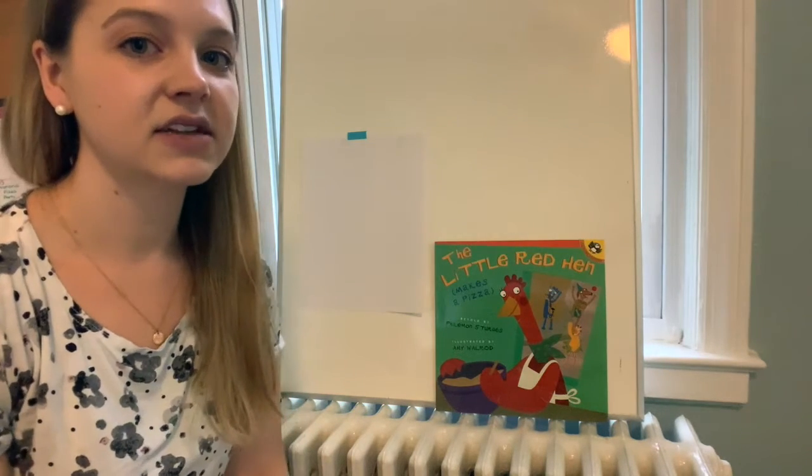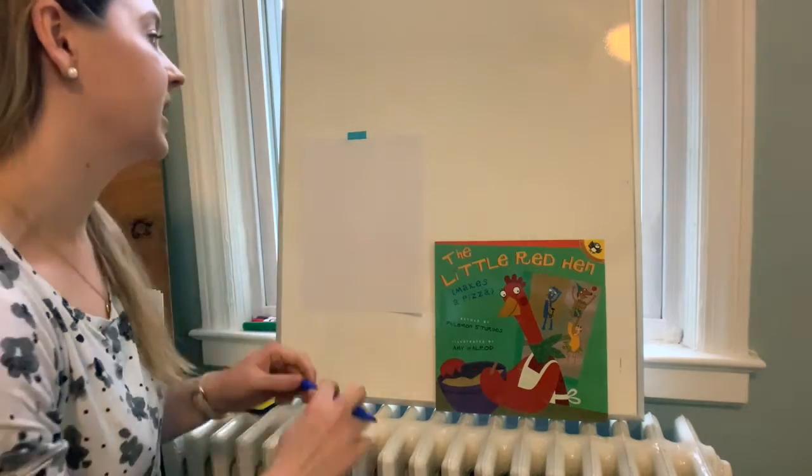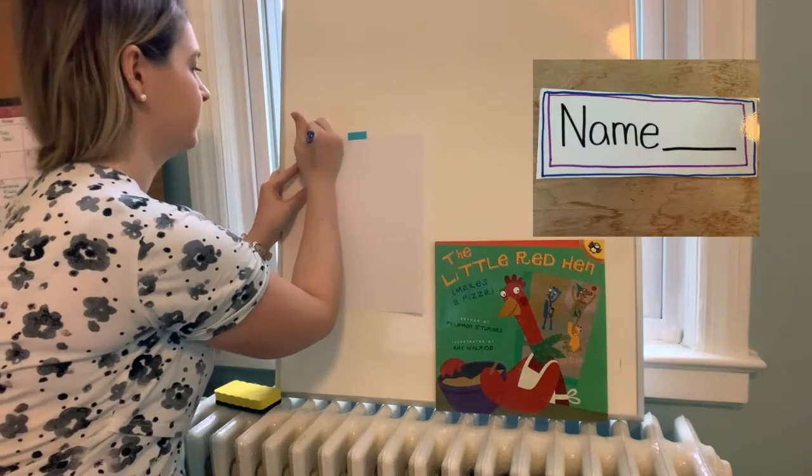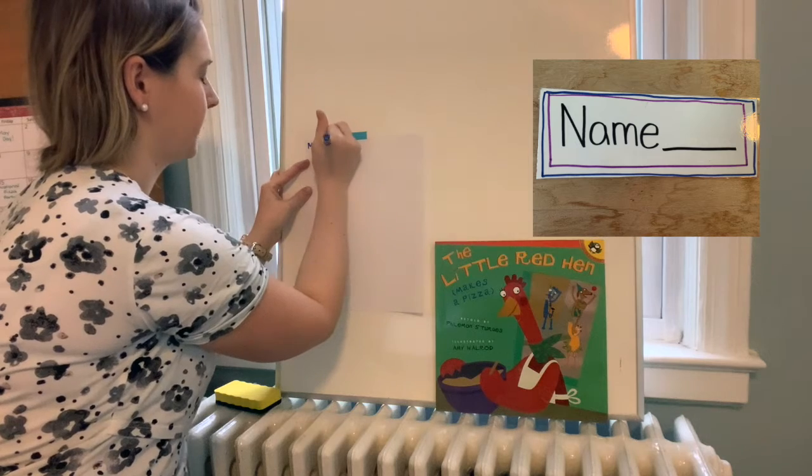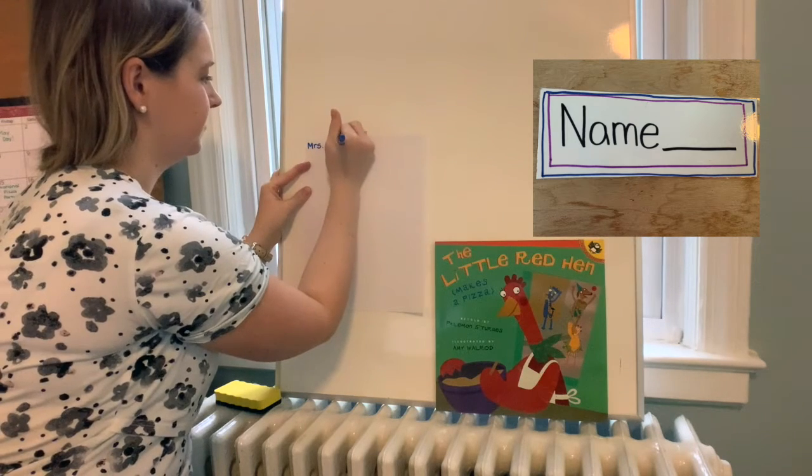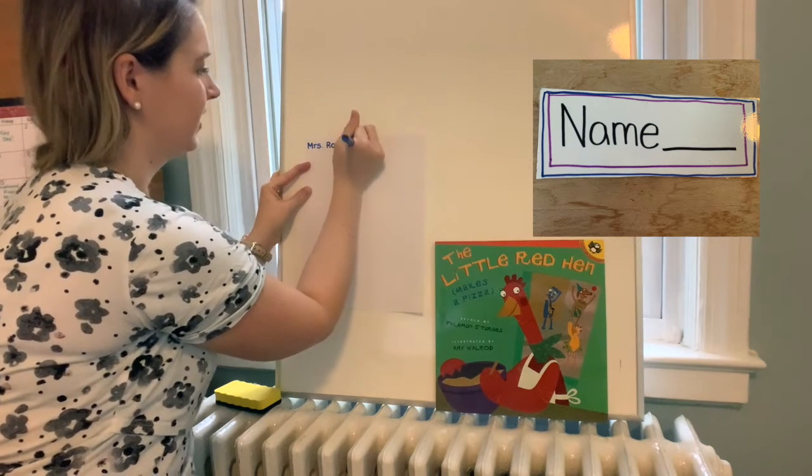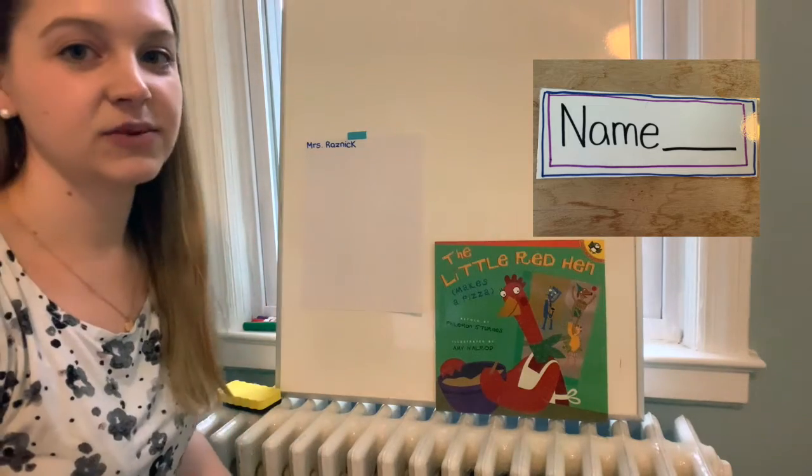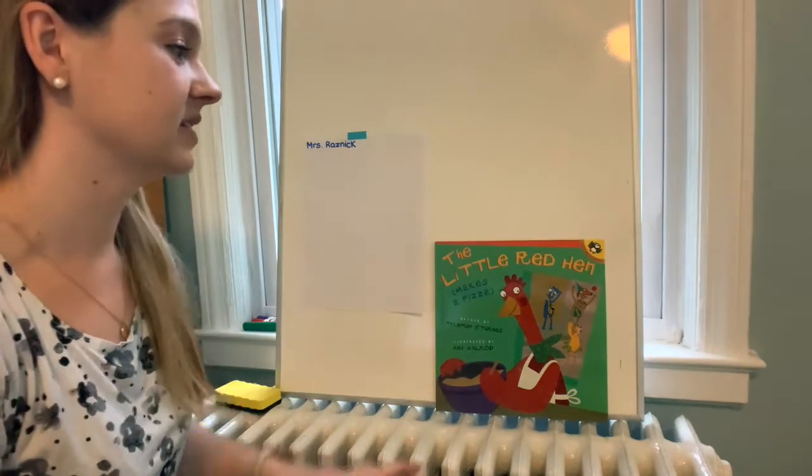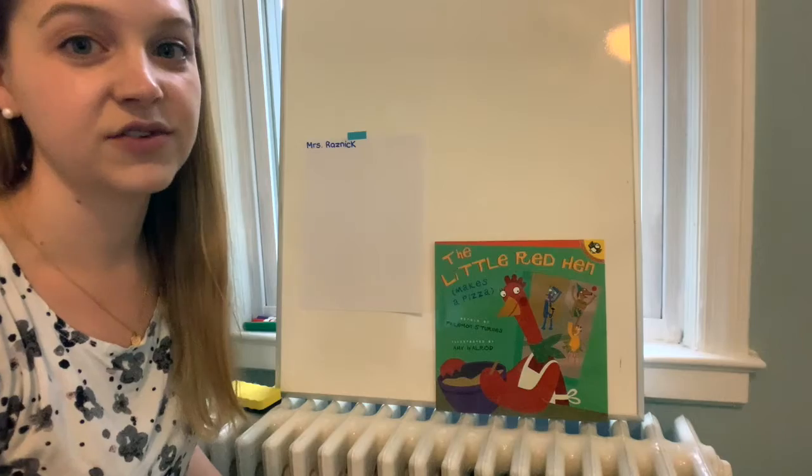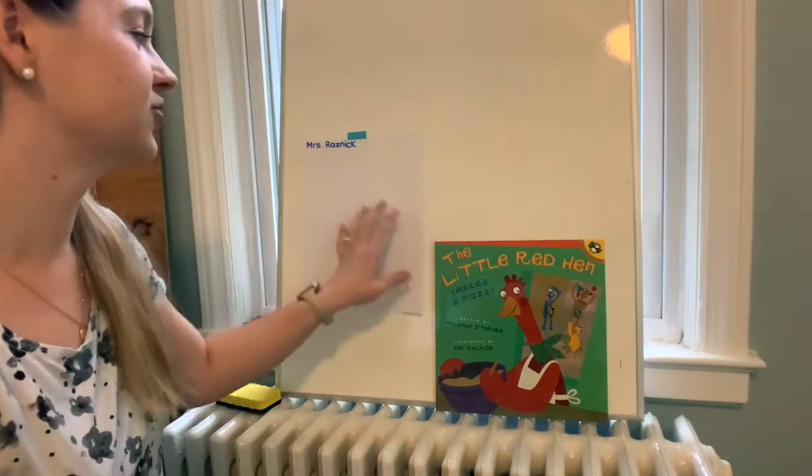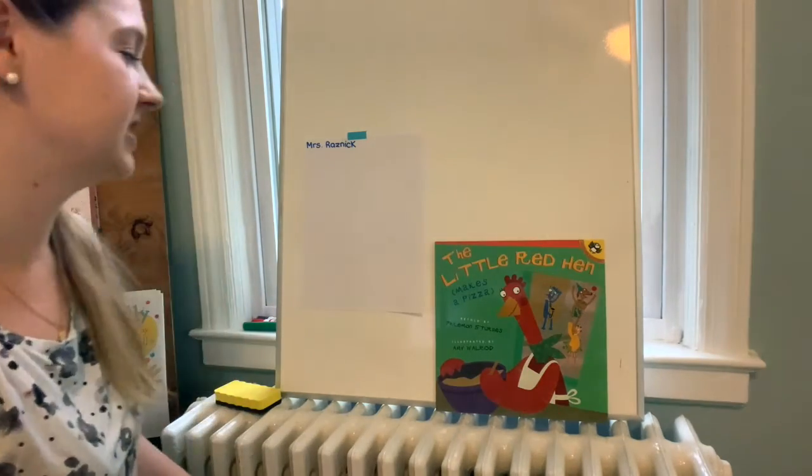When you're ready to get started, we'll start by putting our name at the top of our paper. Then we'll leave a really big space because you can draw a really big pizza like they had in the book with all of your favorite toppings on it. You could even draw a picture of yourself eating that pizza if you wanted to.